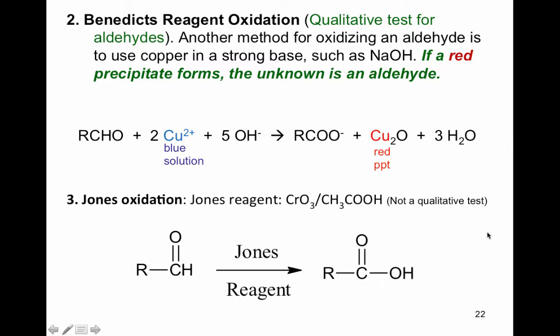The Jones reaction is not a qualitative test—it simply converts an aldehyde to a carboxylic acid. The reagents are CrO3 and acetic acid. Many times, instead of writing these reagents, the problem may just say Jones reagent. Similarly, Tollens reagent may be written out as ammonium hydroxide with silver ion, or simply labeled Tollens reagent. These are named reactions with named reagents.